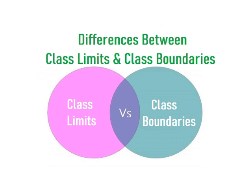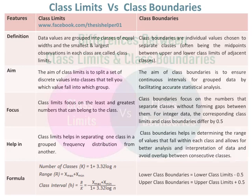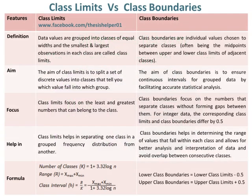Differences between class limits and class boundaries. Data values are grouped into classes of equal widths, and the smallest and largest observations in each class are called class limits. Class boundaries, on the other hand, are individual values chosen to separate classes, often being the midpoints between upper and lower class limits of adjacent classes.